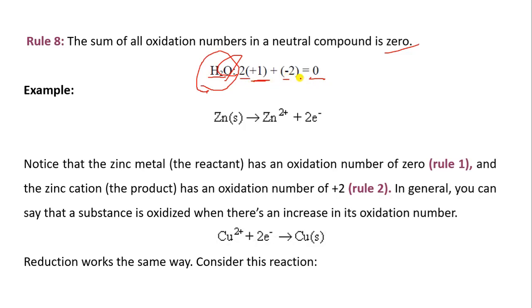Now for example, Zn. When zinc is there alone as a metal, zinc metal has an oxidation number of zero by rule 1. And when it is in the form of cation like Zn2+, it has oxidation number plus 2 by rule 2.